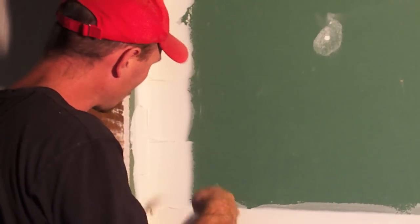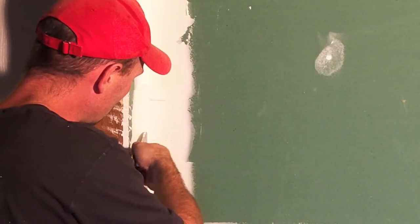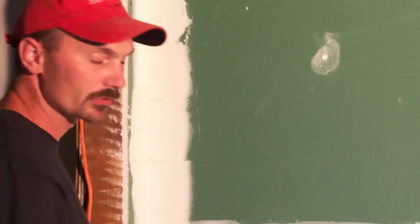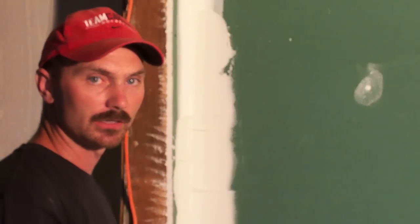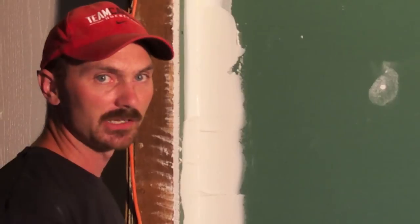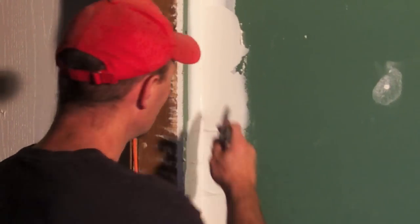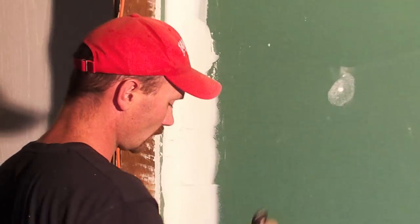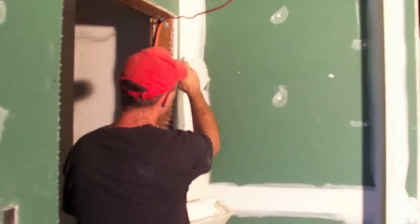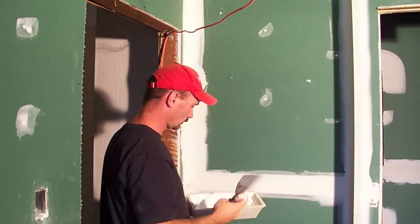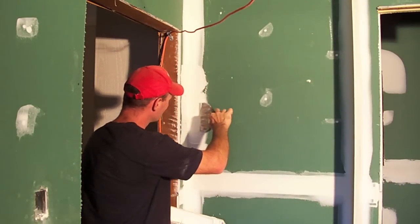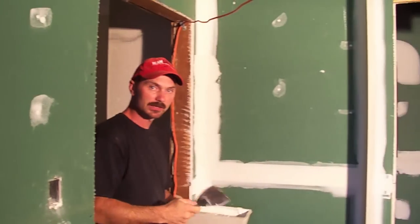And I'm being fairly liberal here but I will be taking most of it off with the corner trowel. And again that's getting back to the thin coats. So you will sometimes put it on fairly liberal but you're going to take quite a bit of it off and work with it. So we've got both sides with the compound applied.